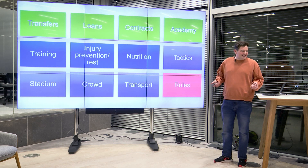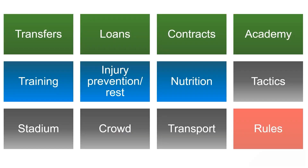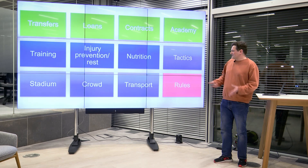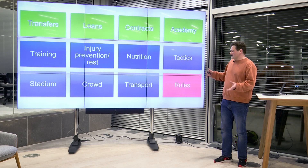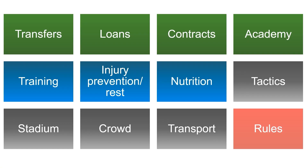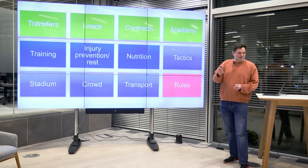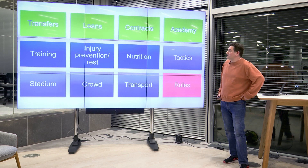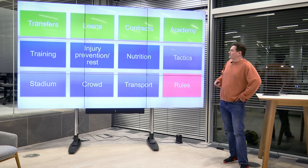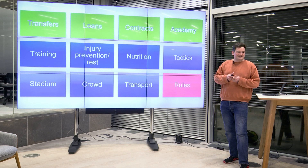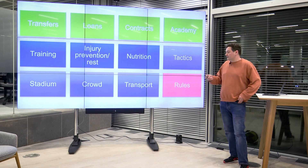I tried to map out what the levers at a club would be. There are recruitment-related levers like transfers, loans, and contracts. Then there are day-to-day things like training, injury prevention, and nutrition. Finally there are match-day things, and then rules — which some people can influence. These levers might have sub-components, like whether a player has a three, four, or five year contract, so you have to think about all of them.